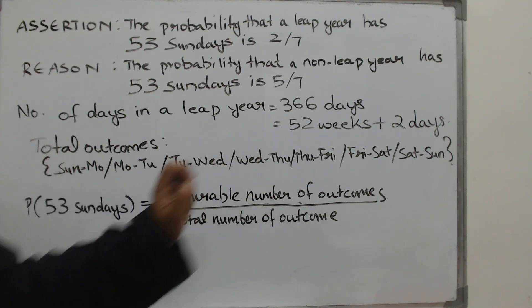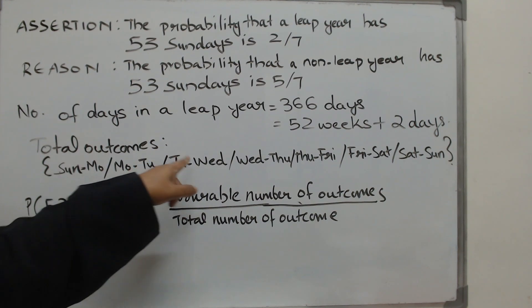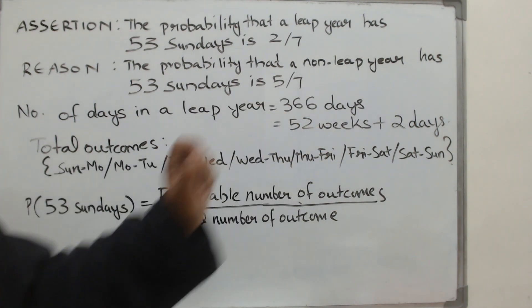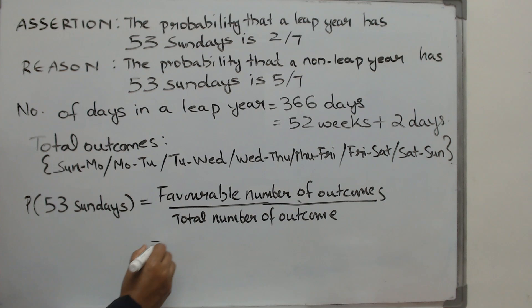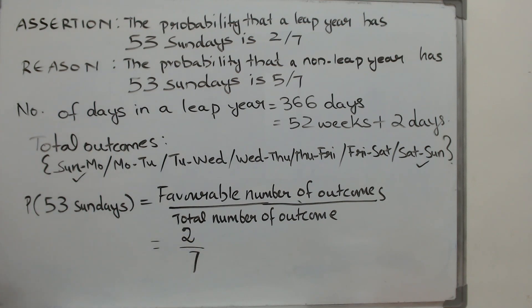There are totally 7 outcomes. It can be a Sunday and a Monday, a Monday and a Tuesday. All of these 7 outcomes is possible. Out of that, how many favorable outcomes is there? There you have a Sunday and a Monday or a Saturday and a Sunday, which means 2 by 7.